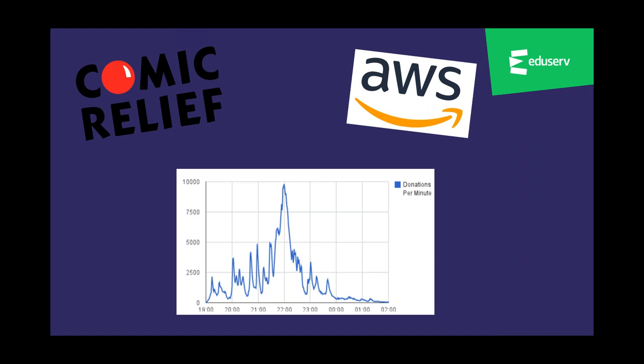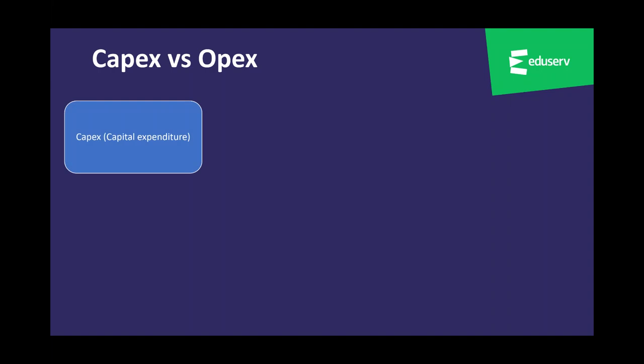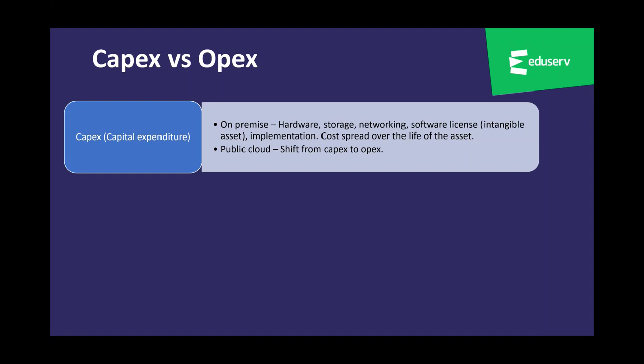Now we're going to look at some of the financial blockers we hear about. Some of the terminology may be new or not relevant to your sector; however, a general understanding of the key accounting terms is really useful when talking to other stakeholders across different industries. CapEx versus OpEx: CapEx is when you buy a fixed asset — something that's going to last several years — and the cost is spread over the useful life of the asset in the form of depreciation. This comes from the accounting principle of matching: spreading the cost over the period of benefit. On-premise, this includes hardware, storage, networking, software licensing, and implementation.